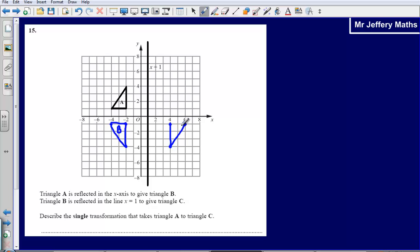Now the question asks us to describe the single transformation that takes triangle A to triangle C. Well, hopefully what you can see is that this is going to be a rotation. Shape A has just been rotated around to get to triangle C. So we can say that it is a rotation.